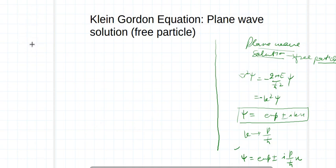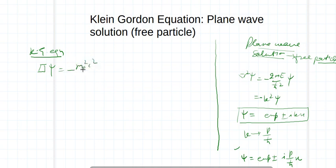Now let us write down the Klein-Gordon equation. The Klein-Gordon equation can be written as shown here — this is our equation.